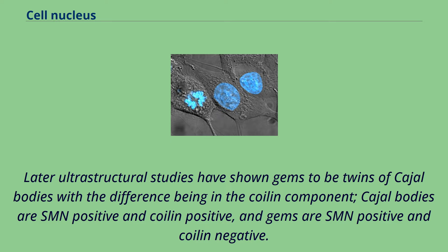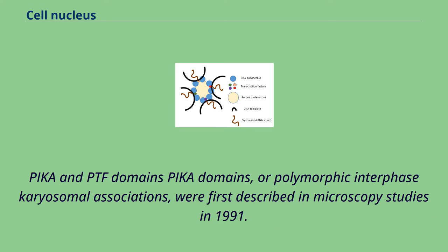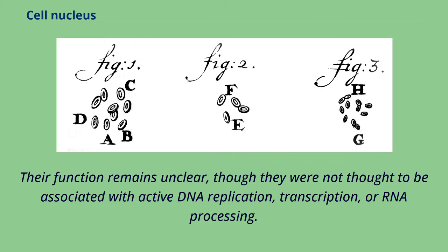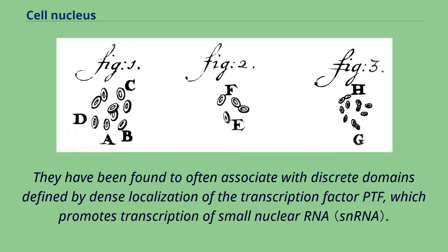PICA domains, or polymorphic interphase karyosomal associations, were first described in microscopy studies in 1991. Their function remains unclear, though they were not thought to be associated with active DNA replication, transcription, or RNA processing. They have been found to often associate with discrete domains defined by dense localization of the transcription factor PTF, which promotes transcription of small nuclear RNA.